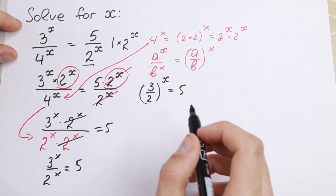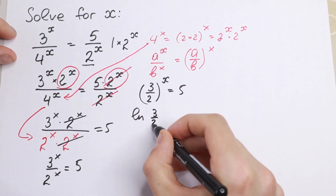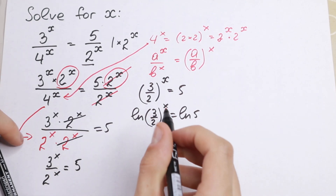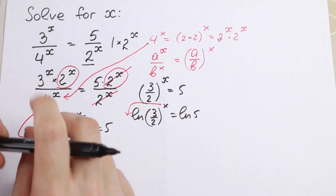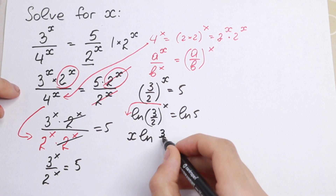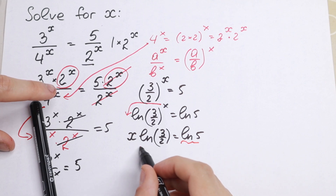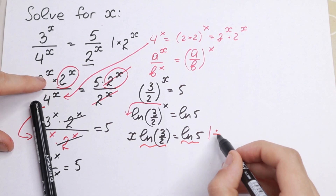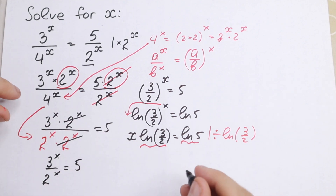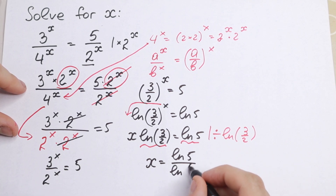How can we solve this right now? We have x in the exponent, so it's really good to take the natural log of both sides. Taking natural log of (3/2) to the power x equals natural log of 5. Using the main log property, x jumps to the front: x times natural log of (3/2) equals natural log of 5. This is a constant, so we divide both sides by natural log of (3/2), and our x equals natural log 5 divided by natural log of (3/2). And this is our answer.